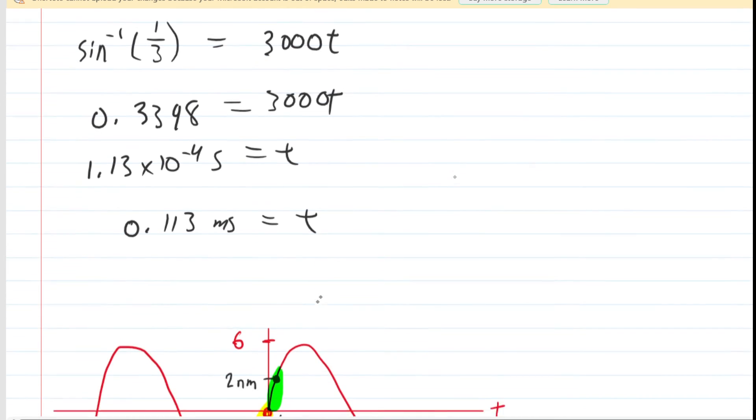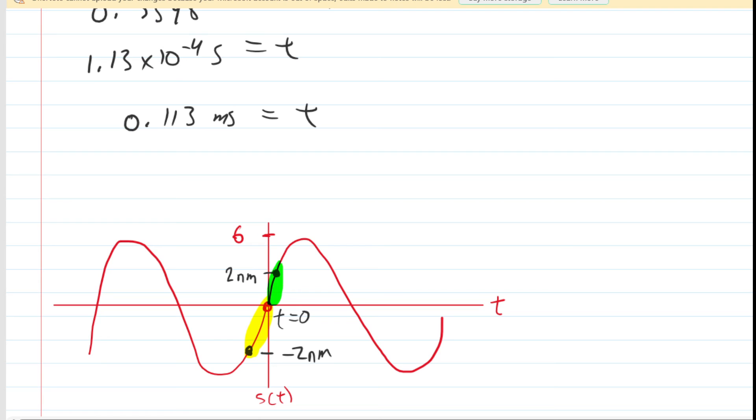That's equal to the time, but let's remember what time that was. That was the time required for the sound wave to travel from its position of 0 to its position of positive 2 nanometers. So in other words, that's the green interval of time. The yellow interval of time is the same, remember. It's a symmetric scenario.